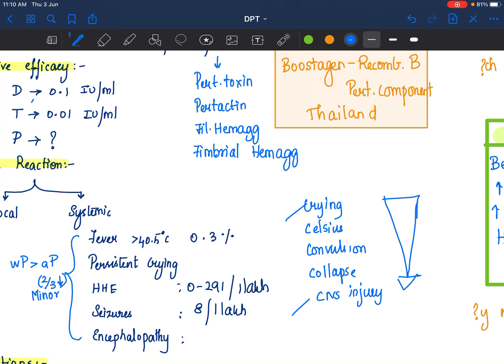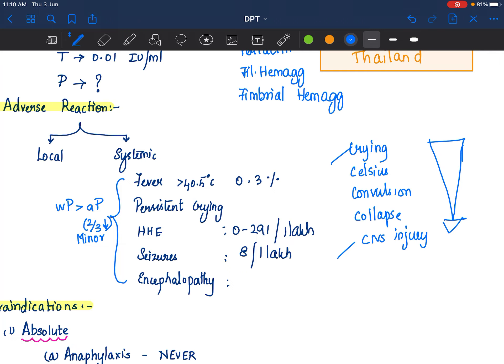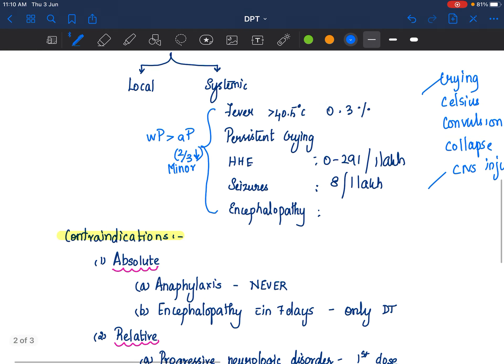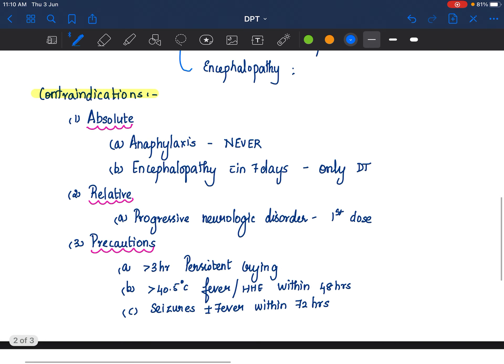All these are also seen with acellular vaccine. Only thing it is seen at a reduced rate. And these are generally considered as a precaution rather than an absolute contraindication. That brings us to our next two topics.